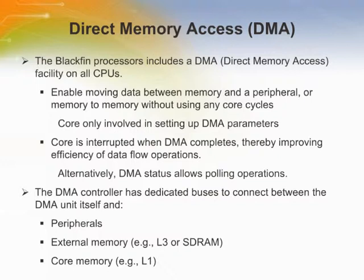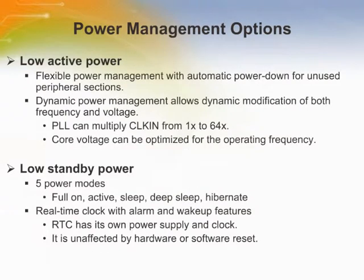The BlackFin also supports various power management options. One is that it is built to maintain low active power — any peripherals not in use are automatically powered down, conserving power. There's also a dynamic power management mechanism that allows dynamically changing the operating frequency and core voltage to optimize power for particular applications. There's an onboard PLL used to multiply the clock input frequency to the desired operating frequency — we can step that up as much as 64 times. We can also optimize the core voltage for the desired operating frequency; when operating at a lower frequency, you generally don't need as high a core voltage.